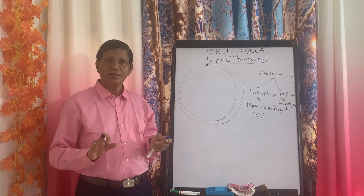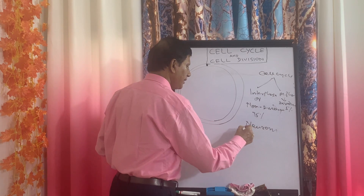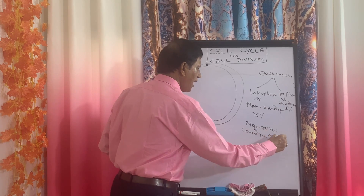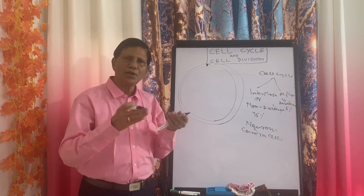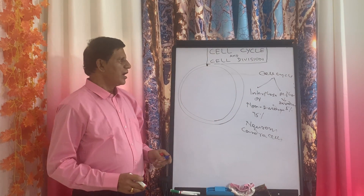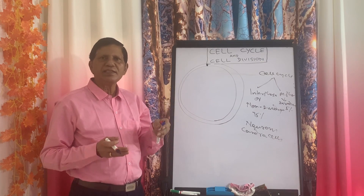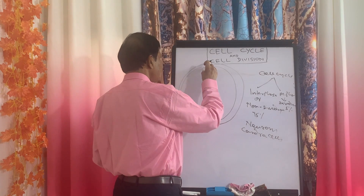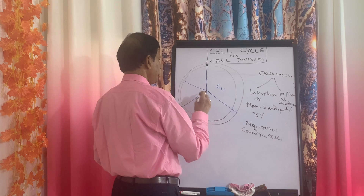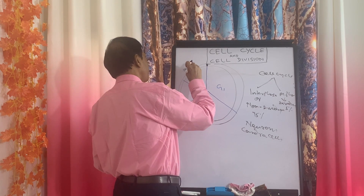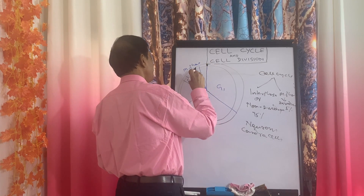The M phase is known as the dividing phase — the actual division takes place only in M phase, which is about 5% of the cell cycle time. Some cells are permanently in interphase, like neurons and cardiac cells — they do not divide. Others occasionally divide, and some always divide. Interphase is further divided into three sub-stages: G1, S, and G2. The M phase is divided into prophase, metaphase, anaphase, telophase, and cytokinesis.